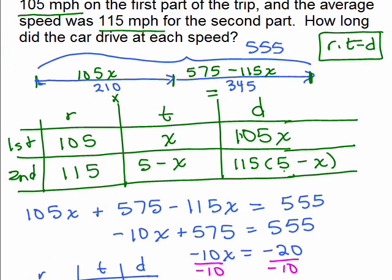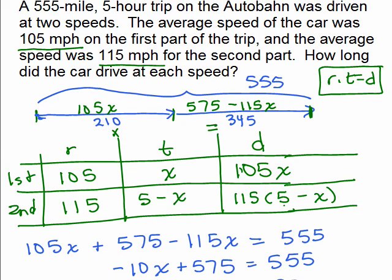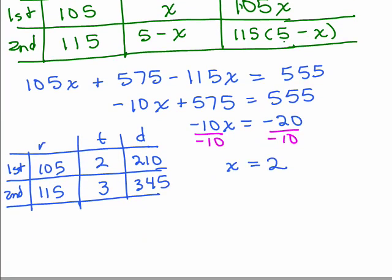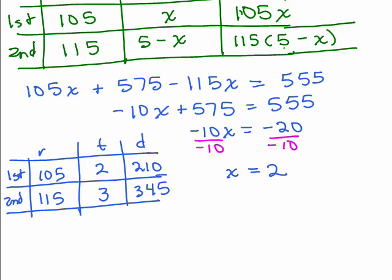Okay, so now the question, how long did the car drive at each speed? Let's see, okay, now I've got all our information right here. The car drove 105 miles per hour for 2 hours.